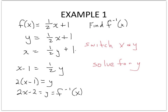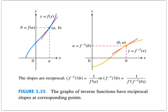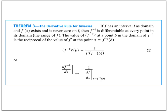Now if I take the derivative of my original function, which was one-half x plus 1, that simply gives me one-half. If I take the derivative of my inverse, which is 2x minus 2, notice they are actually reciprocals of each other. This is a very key idea — the slopes, the actual slopes of f(x) and its inverse, are reciprocals of each other, and we can see this through their derivatives.